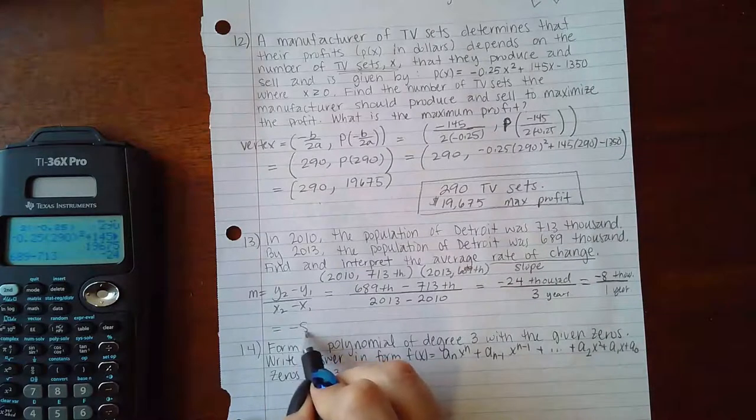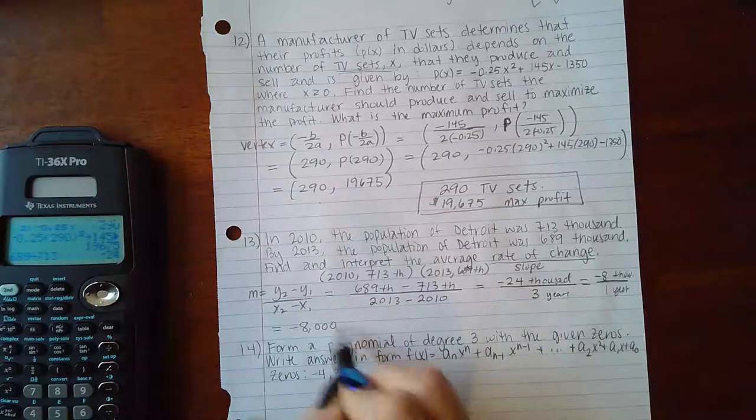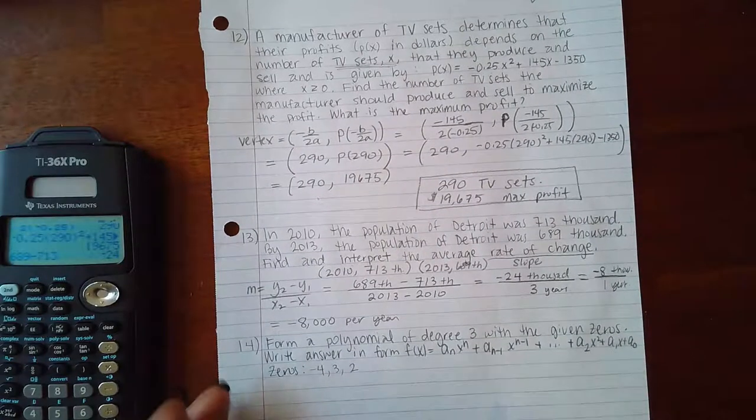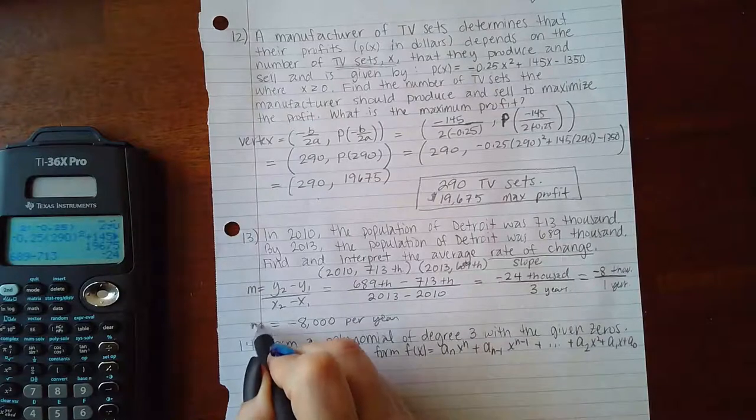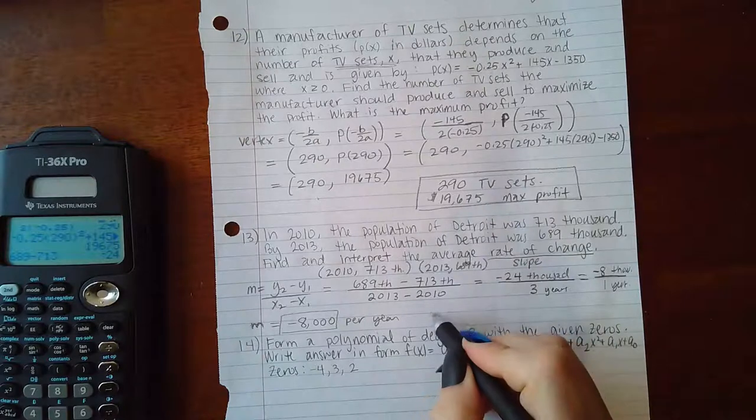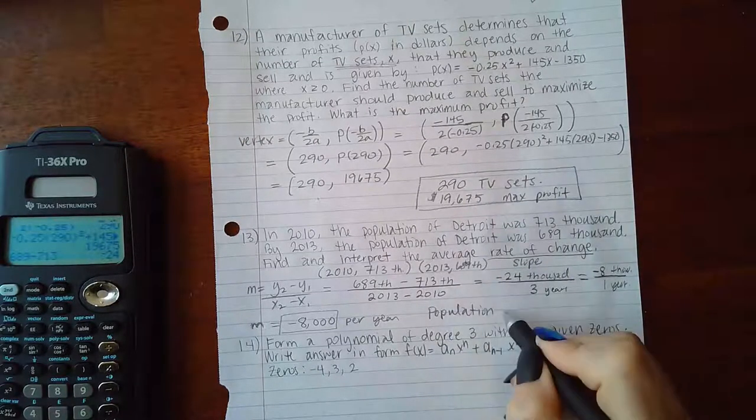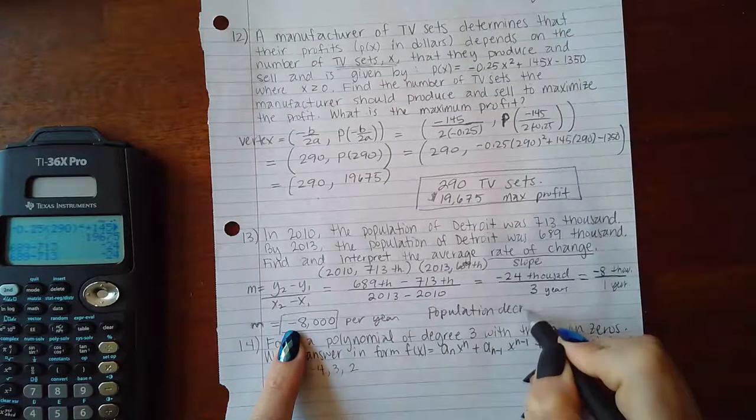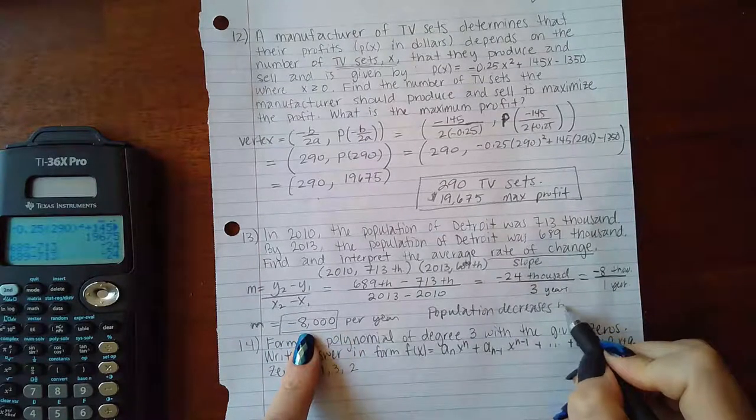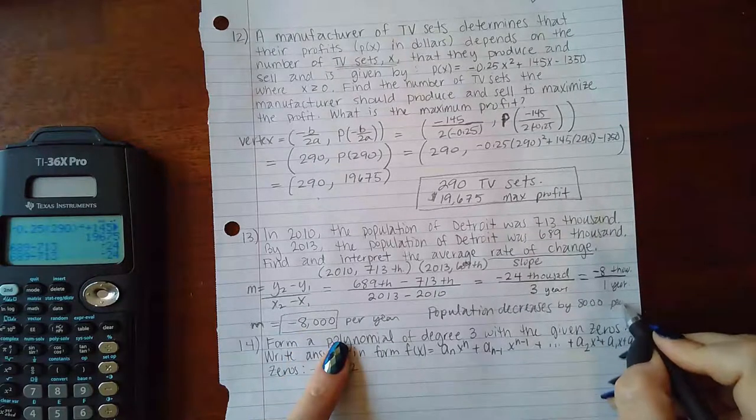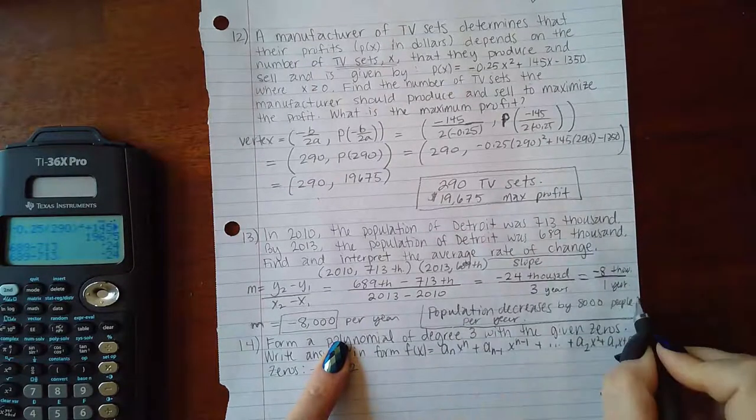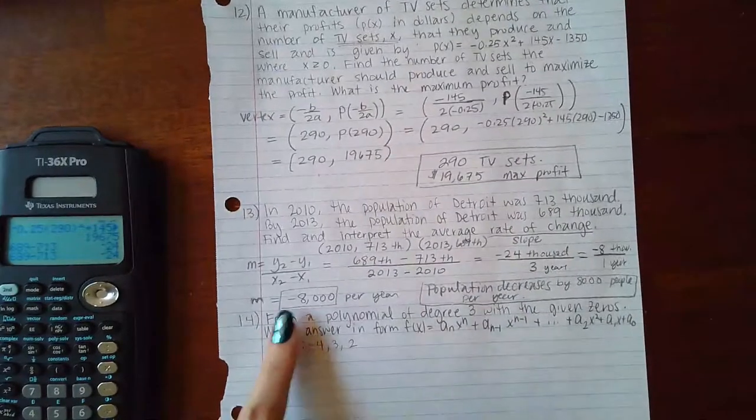It says find the rate of change. The rate of change is negative 8,000. Then interpret it. That means the population decreases—because it's negative. If it were positive, the population would be increasing. It decreases by 8,000 people per year. That's the interpretation: you have the numerical value for the rate of change, and you also have to interpret that number.